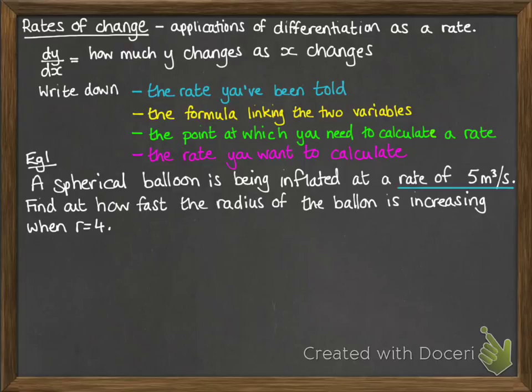We've got the rate of the volume, because it's talking about the balloon being inflated. So the volume changing over time. And the units that it gives us gives us the clue as to what that rate is talking about. So we have metres cubed for volume, seconds for time. So we're told dv by dt, the rate the volume is changing over time. And that's equal to 5.